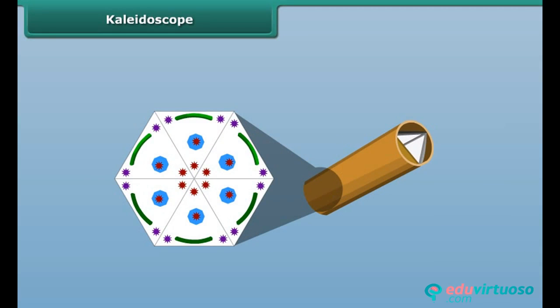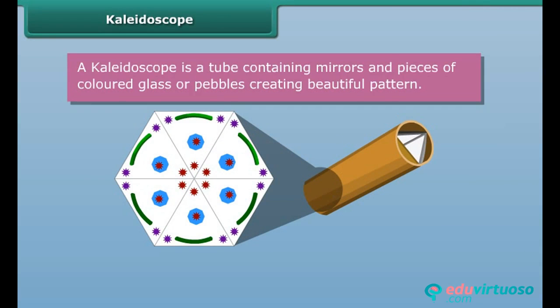What is a kaleidoscope? It is a tube containing mirrors and pieces of colored glass and pebbles. As the viewer looks into one end, light entering the other end creates a colorful pattern due to the reflection of the mirrors when rotated.